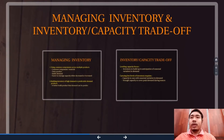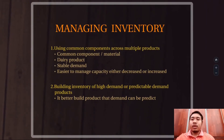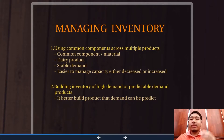Now I will continue with managing inventory and the inventory-capacity trade-off. For managing inventory, there are two approaches. First is using a common component across multiple products — the firm or company will use one base material to produce every type of product. For example, we can take milk in dairy production.